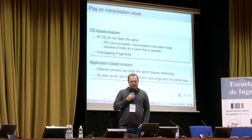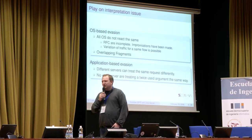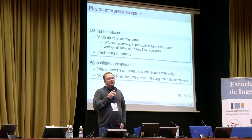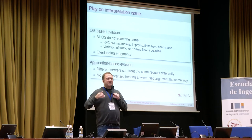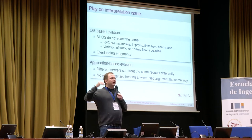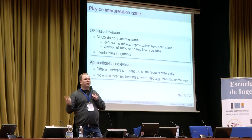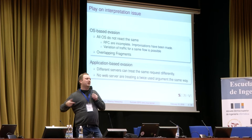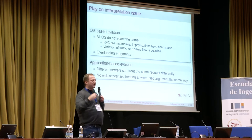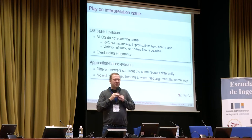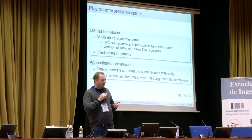There's an even trickier attack: application-based evasion. For example, if you pass a request to two different web servers with twice the same argument — like A=1 and A=2 — you don't know which value the web server will use. It might be 1, it might be 2, or in some cases it creates a two-dimensional array. So it gets really complicated to know what is going on.